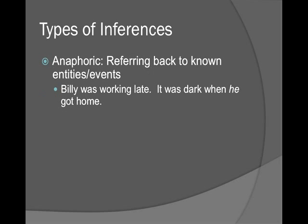There are several types of inferences. The first is anaphoric — referring back to known events. For example: 'Billy was working late. It was dark when he got home.' 'He' is an ambiguous pronoun that refers back to Billy. This happens with ambiguous names — like Aaron — where you can disambiguate by getting 'he' or 'she.' Anaphoric inferences go back in a text, usually with pronouns, 'that is,' 'this is,' and similar constructions.